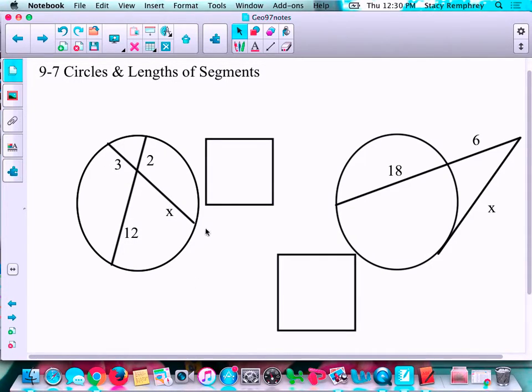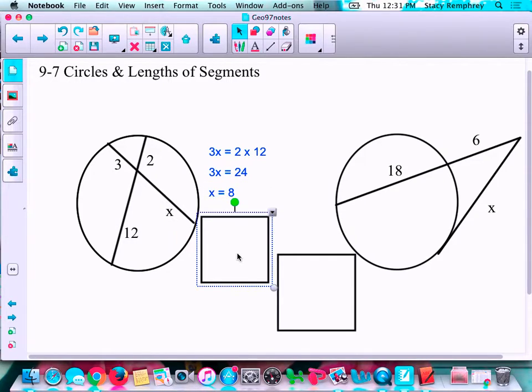All right, first thing I do is I look and I say, okay, I see two chords. Two chords are intersecting. And the theorem says the product of the segments of the chord equal the product of the segments of the other chord. So I have 3 times X equals 2 times 12. I simplify, and then I solved to get X equals 8.